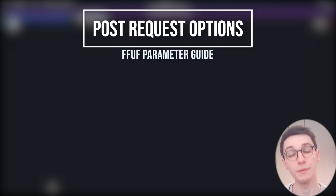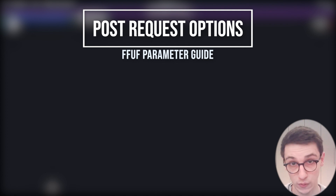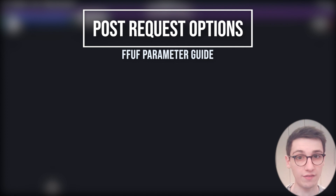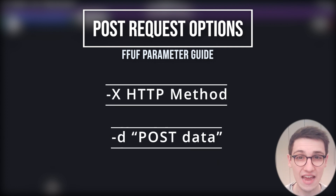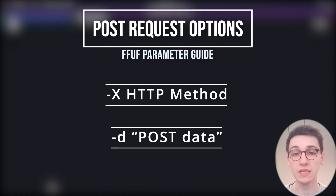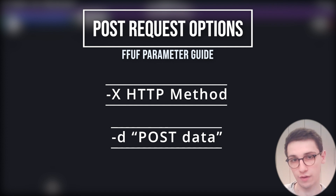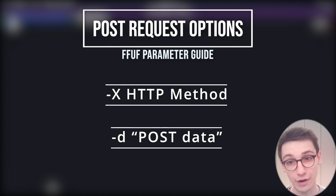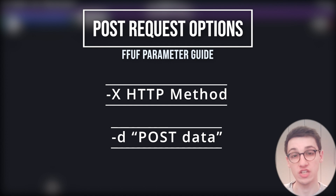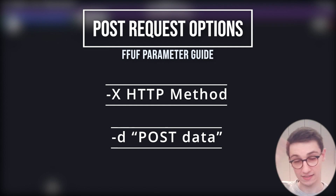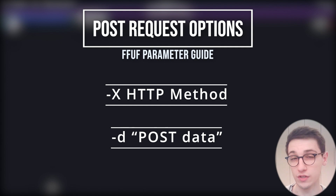Let's look at some POST request options, since it's very useful to fuzz POST requests — that can lead to IDORs and all kinds of interesting things in APIs. First, -X lets you supply an HTTP method; the default is GET but you can set it to POST. Then -d lets you supply POST data such as JSON, and this data can include your FUZZ keyword to place words from your word list into the POST body.